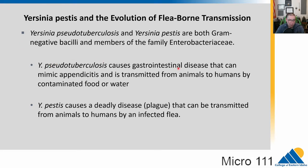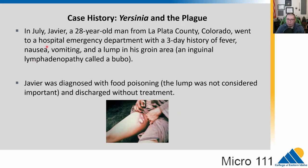Pseudotuberculosis generally causes gastrointestinal issues and occasionally lung infections, and is transmitted from animals to humans through contaminated food and water via the fecal-oral route. Yersinia pestis causes the deadly plague and is transmitted from animals to humans with a flea intermediary. We have a case study: Javier, 28 years old from Colorado, presenting in July. He went to the emergency room with a three-day fever, nausea, vomiting, and a lump in the groin region.